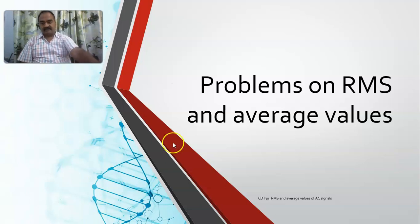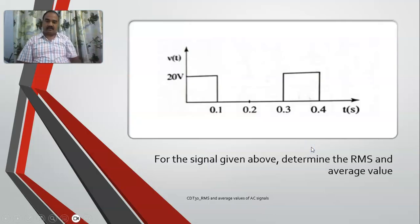In the last lecture, we have seen the problem on a sawtooth waveform. Now, in this lecture, we will see a pulse wave as you can see in the picture. For this pulse wave, we will determine the RMS value and also the average value.